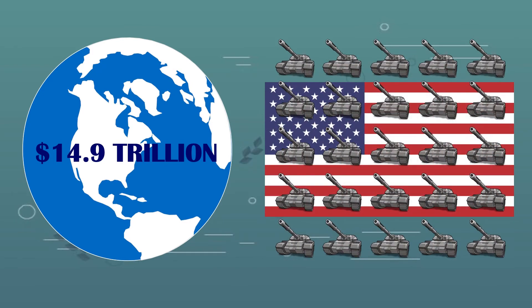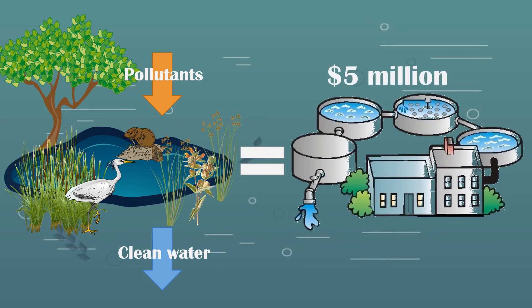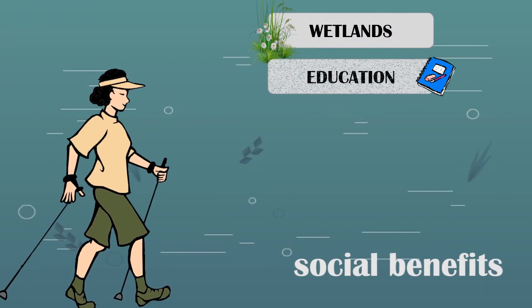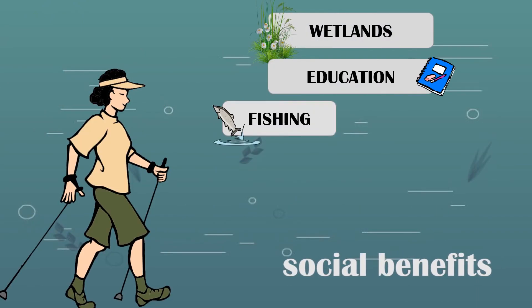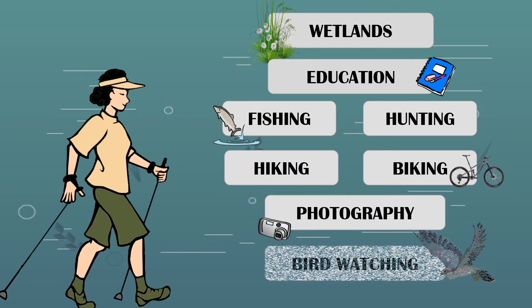Globally, natural wetlands are estimated to be valued at $14.9 trillion dollars — 25 times larger than the United States' annual military spending. The Congaree Bottomland Hardwood Swamp, a natural wetland in South Carolina, removes pollutants from the watershed equivalent to what would be removed by a $5 million treatment plant. Wetlands are also inviting places for recreational activities and provide educational opportunities to students of all ages.